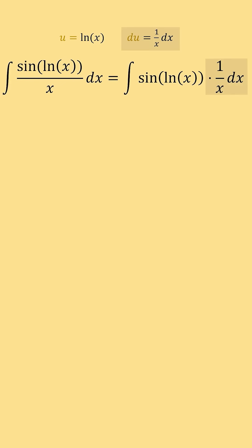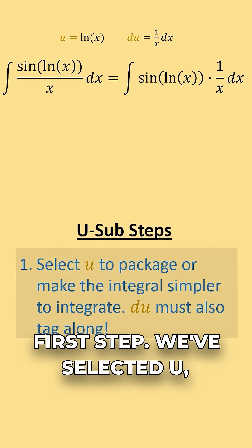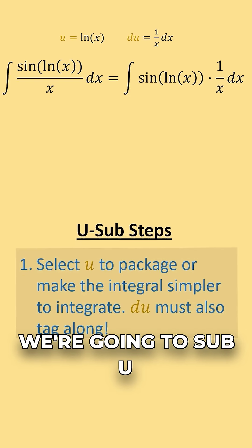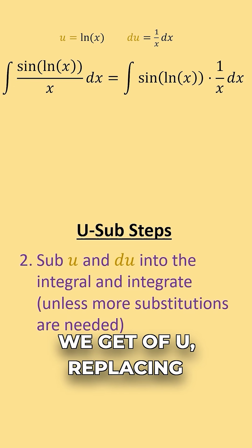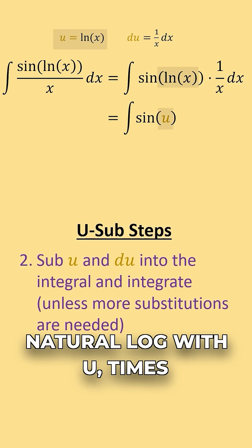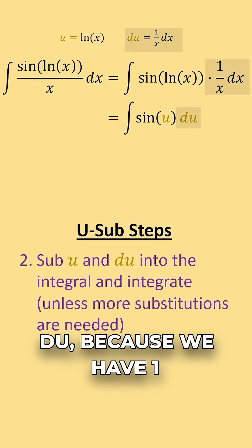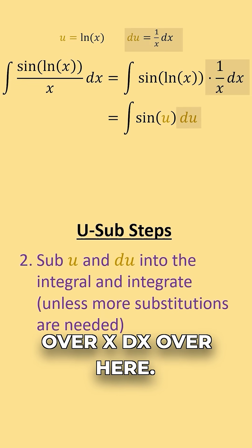Du was here the whole time. So we've completed our first step. We've selected u, we found our du. Now we're going to sub u and du in. So we get sine of u, replacing natural log with u, times du, because we have 1 over x dx over here.